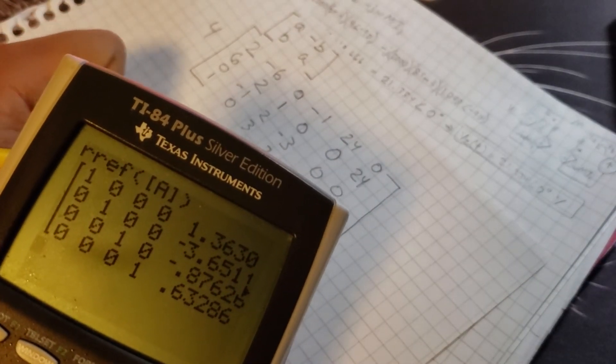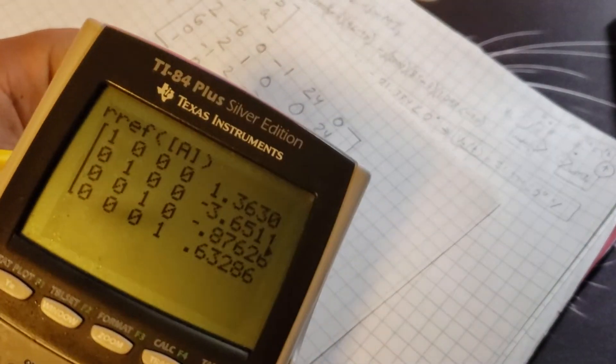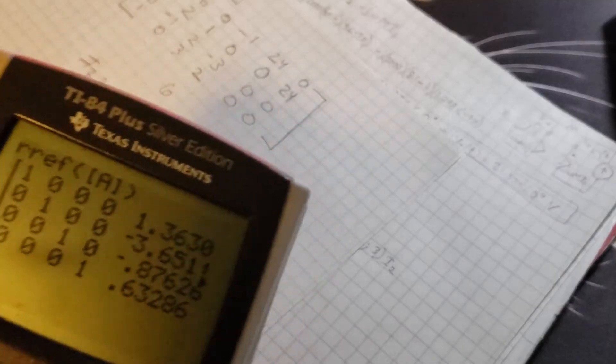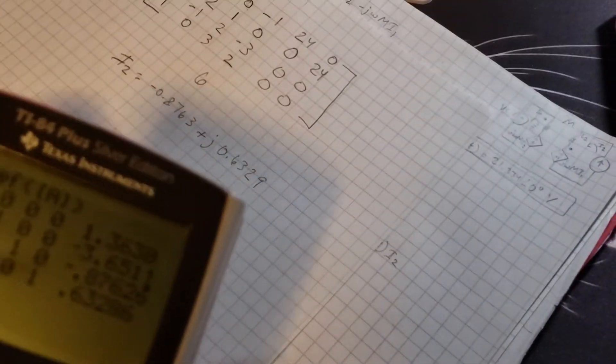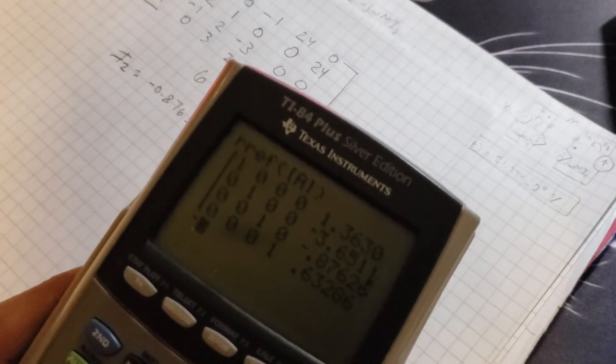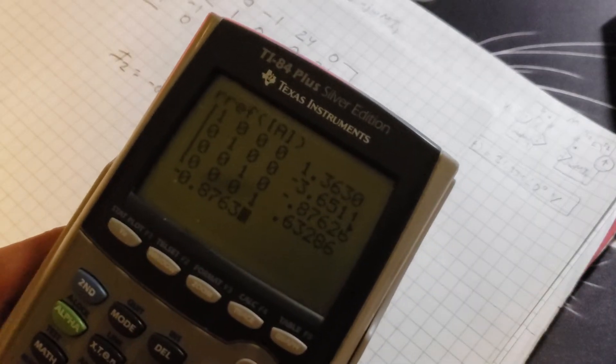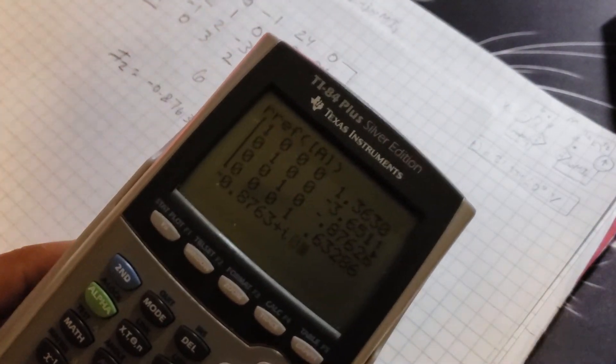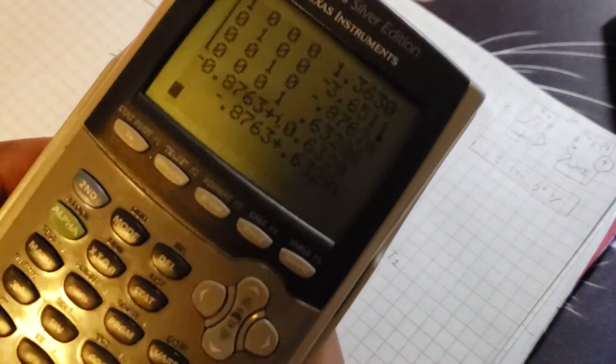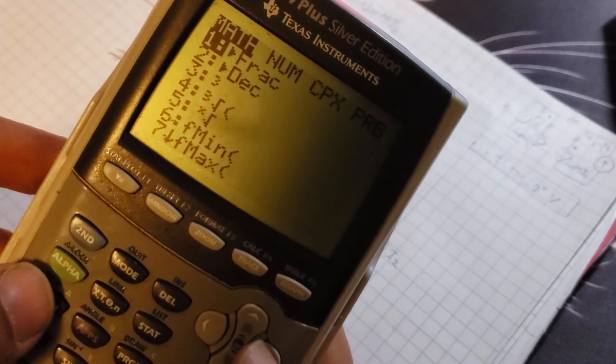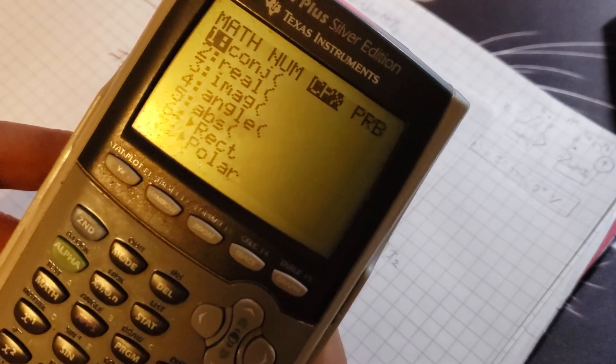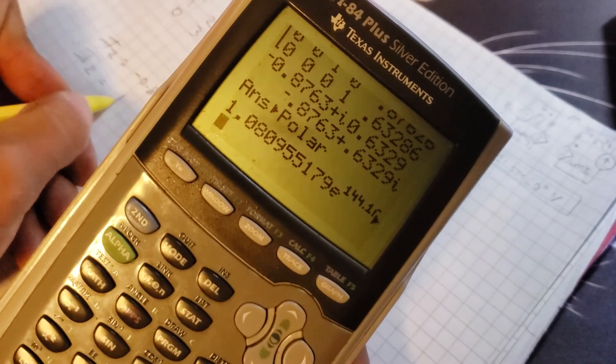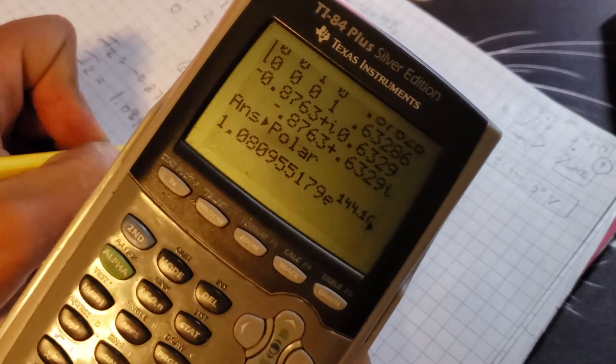I'm gonna type that into the calculator and turn it into polar. Type negative 0.8763 plus second decimal for the j, then 0.6329, press enter. Once it's stored, click on math, scroll over to CPX complex, press number 7 for polar. There's your answer: my i2 current is 1.081 angle 144 degrees.